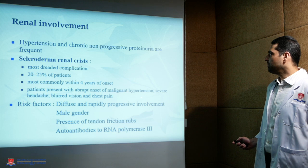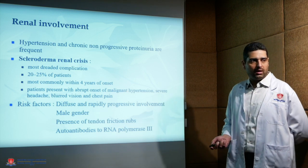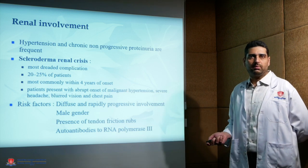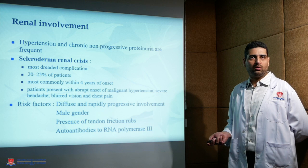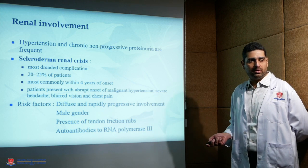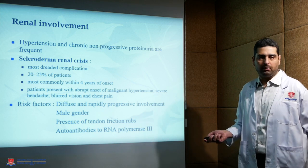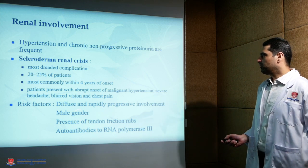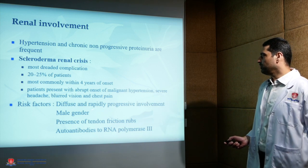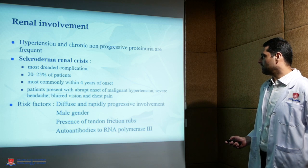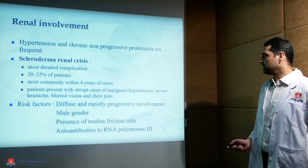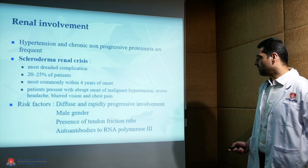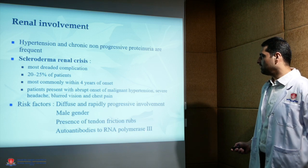Malignant hypertension is defined as systolic blood pressure around 180 and diastolic around 120 developing within a short span of time. Risk factors for scleroderma renal crisis include diffuse and rapidly progressive involvement, male gender, presence of tendon friction rubs, and autoantibodies to RNA polymerase-3.